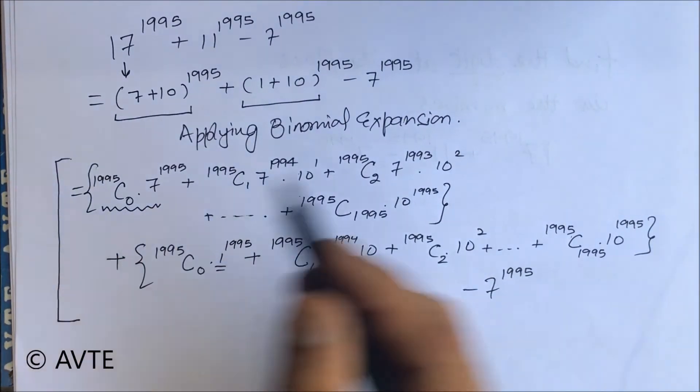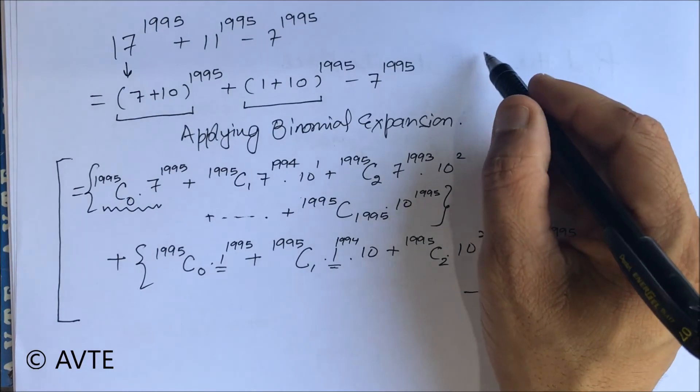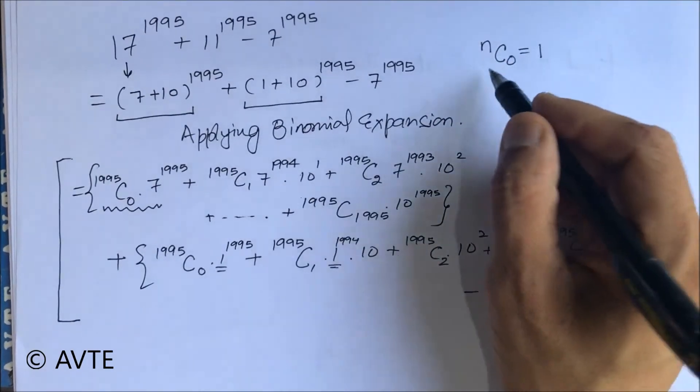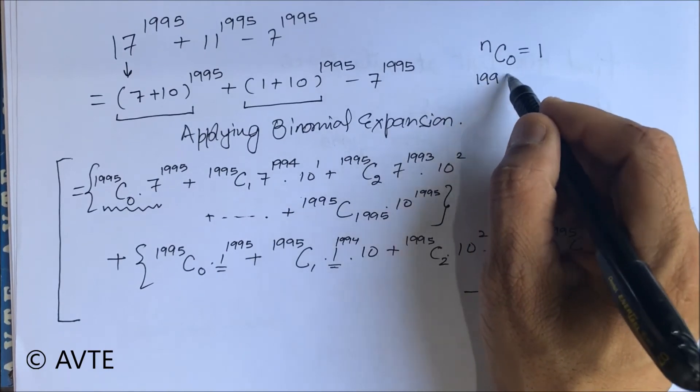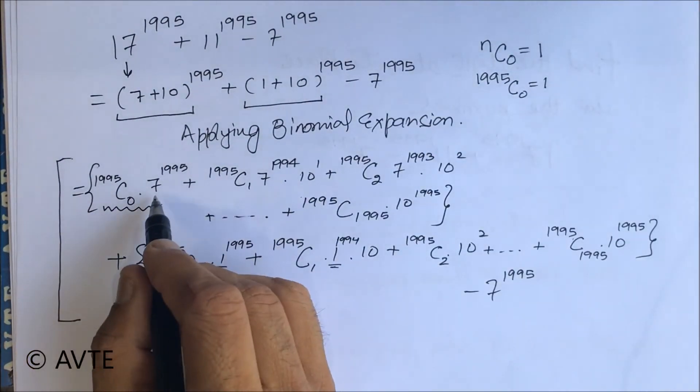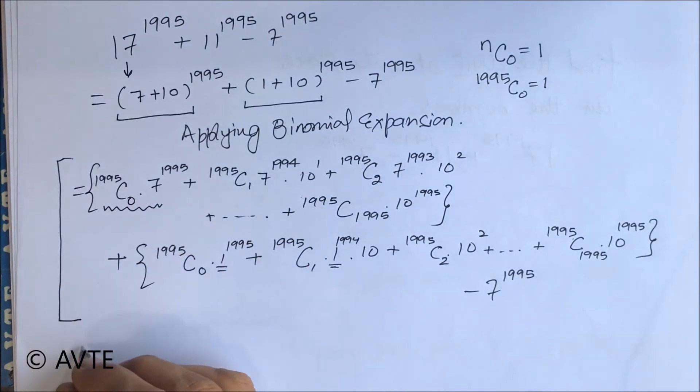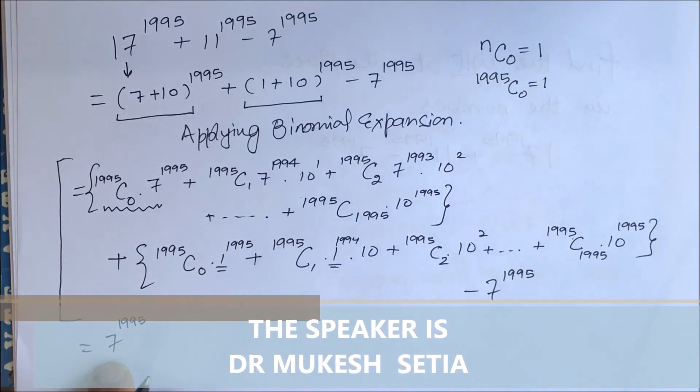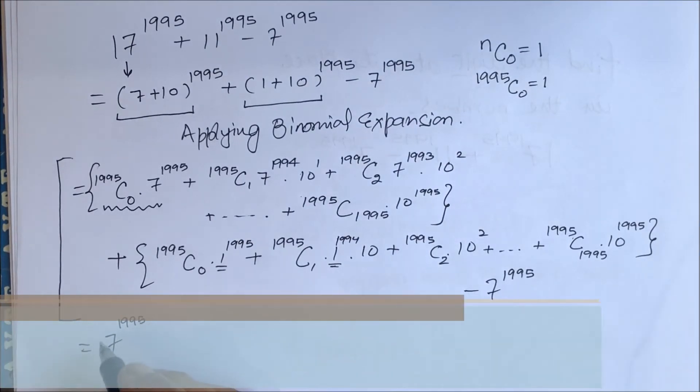Now what is this? Because we have one property that nC0 is 1. So 1995C0 will be 1 and we will be left with this expression will simply be 7 raised to power 1995 and this 7 cancelled with the last term.